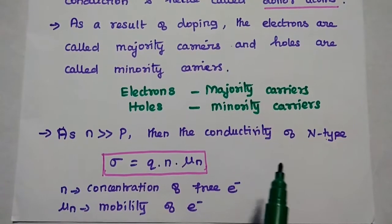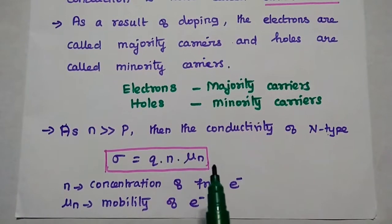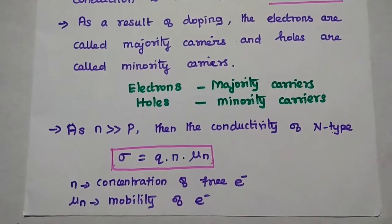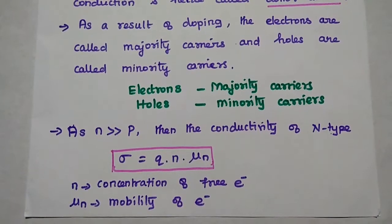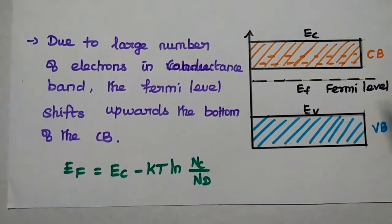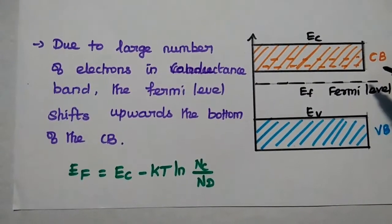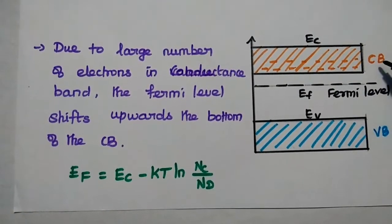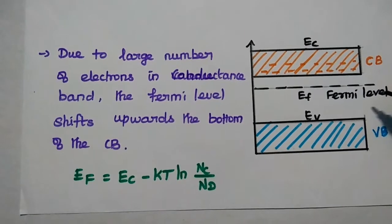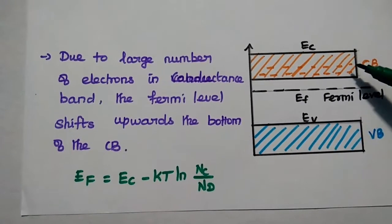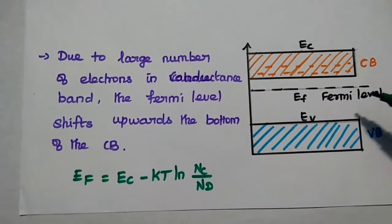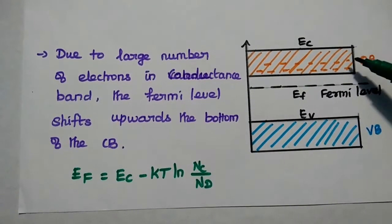The conductivity of N-type is given by σ = q × n × μn, where q is the charge, n is the concentration of electrons per unit volume, and μn is the mobility of electrons. Due to the large number of electrons in the conduction band, the Fermi level shifts upwards towards the bottom of the conduction band. For N-type, the Fermi level moves towards the conduction band but remains below it.